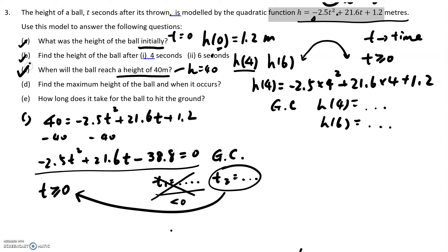So we've gone through that, find the maximum height of the ball and when it occurs. So I've drawn a graph here, roughly, that would be the maximum height. So maximum height. How are you going to calculate the maximum height? What you do is you're purely going to use technique.